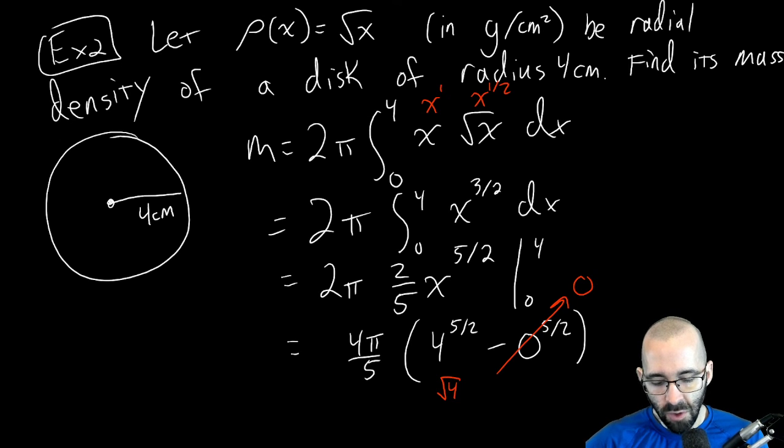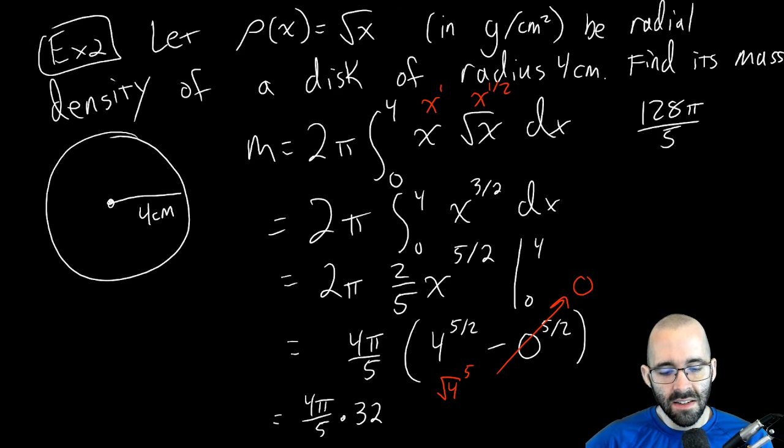We get 4π/5 times 32, which is 128π/5. That's our exact answer.